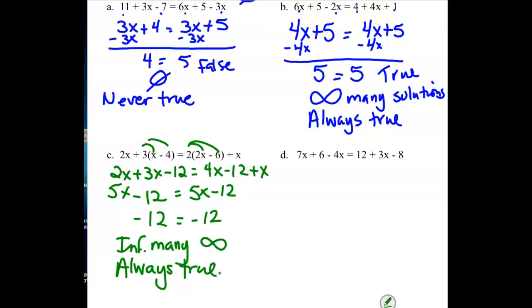You can pause the recording and try this next one, and then turn it back on to check your work. Checking our work: 7x minus 4x is 3x. On this side, we have 3x. The 12 and the negative 8 combined to be a 4. Subtracting 3x from both sides, we get the statement 6 equals 4. And because it is false, there's no solution. It is never true.